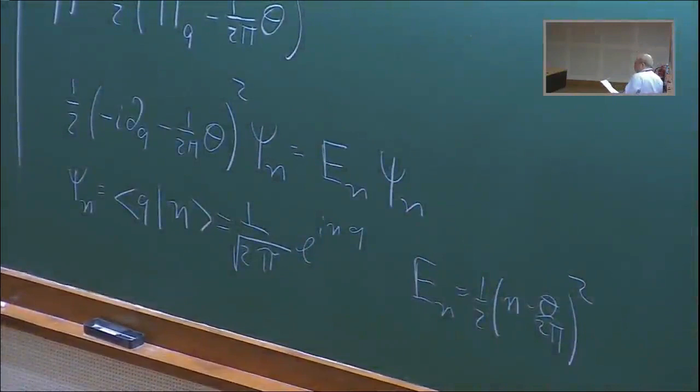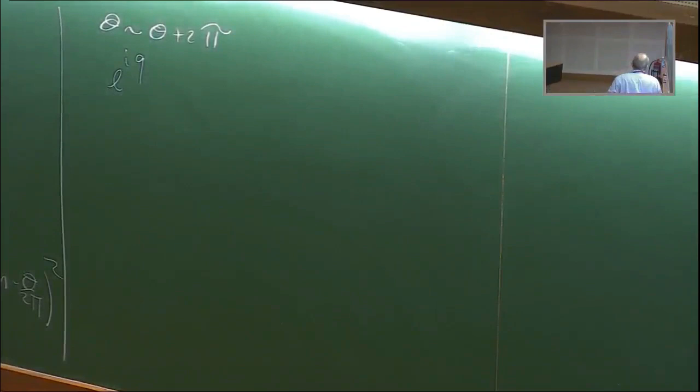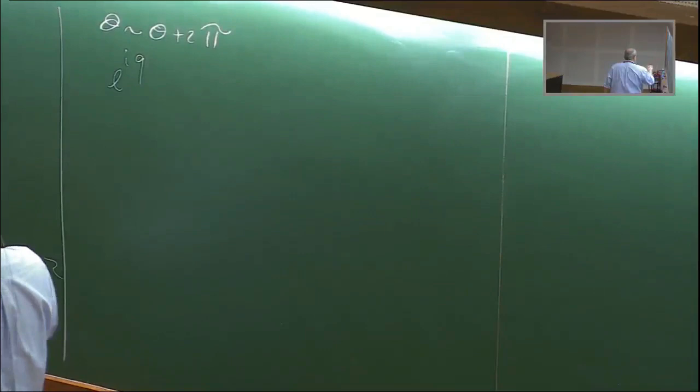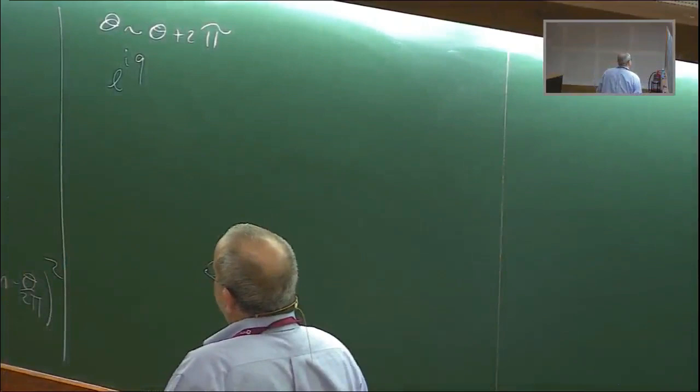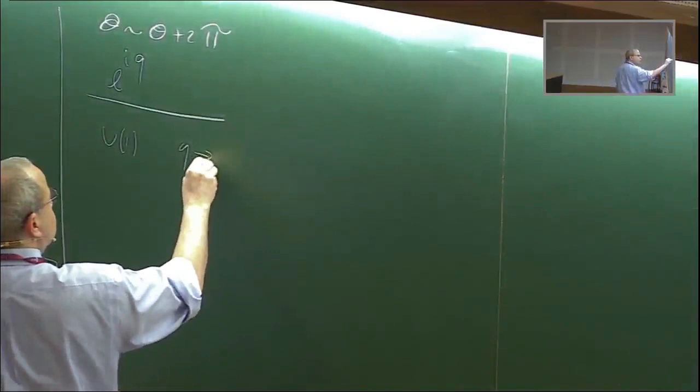Now let's discuss theta versus theta plus 2π. There is a similarity transformation on the system — multiplying by e^(iq) — which conjugates the Hamiltonian at theta to the Hamiltonian at theta plus 2π, mapping the Hilbert space accordingly. Therefore we can restrict attention to theta between 0 and 2π.